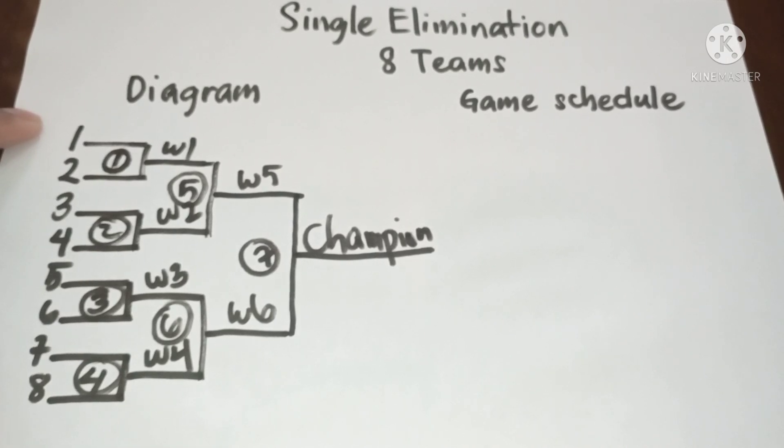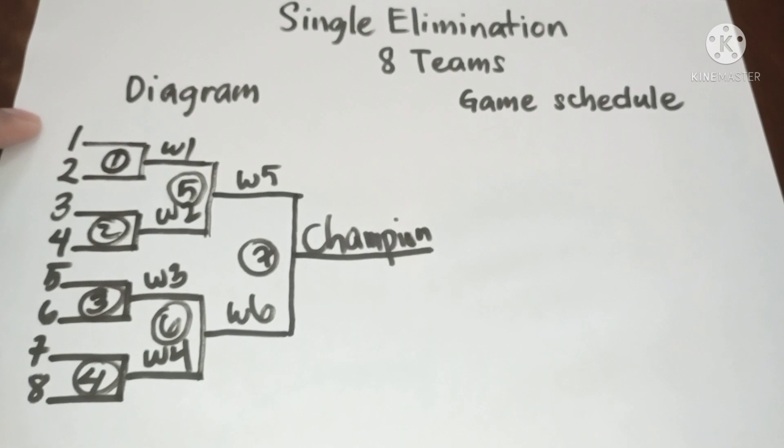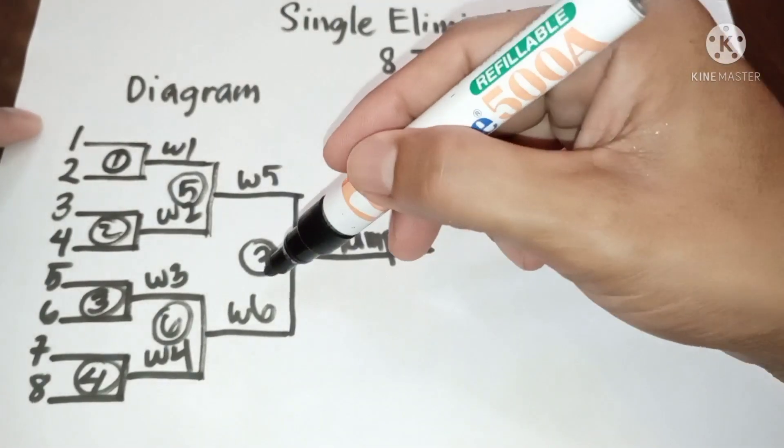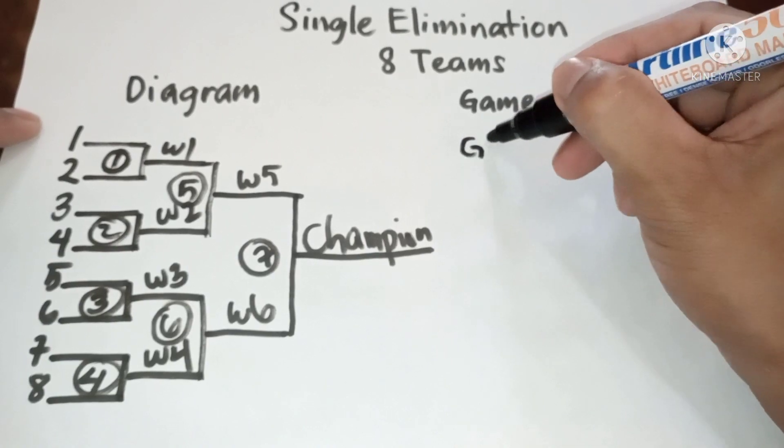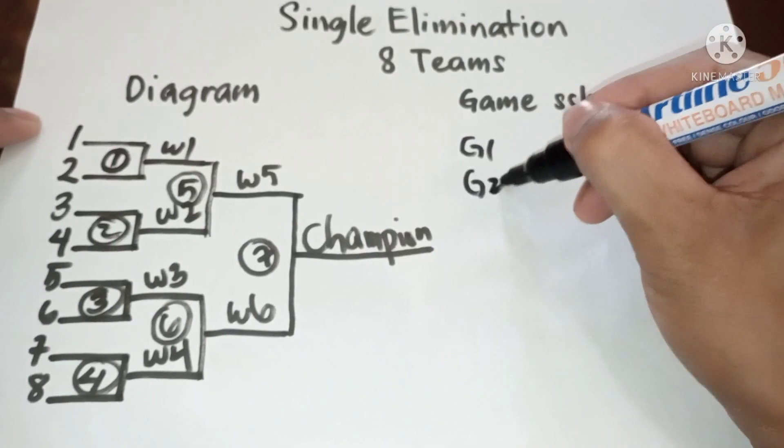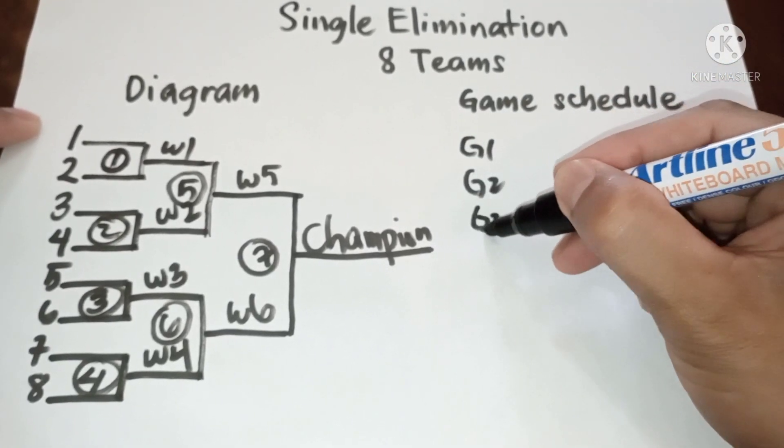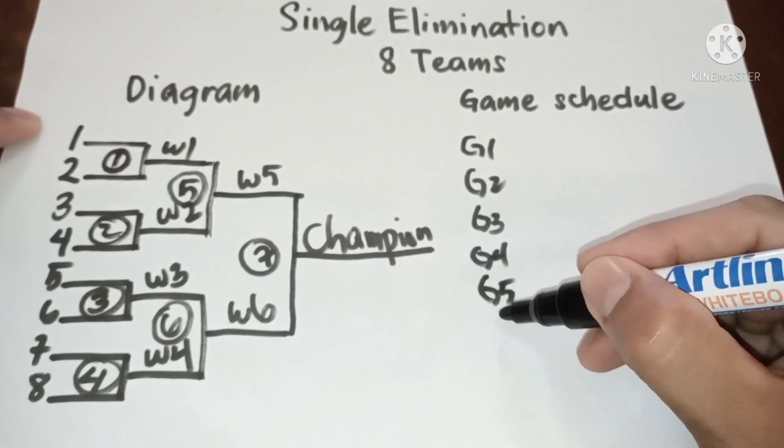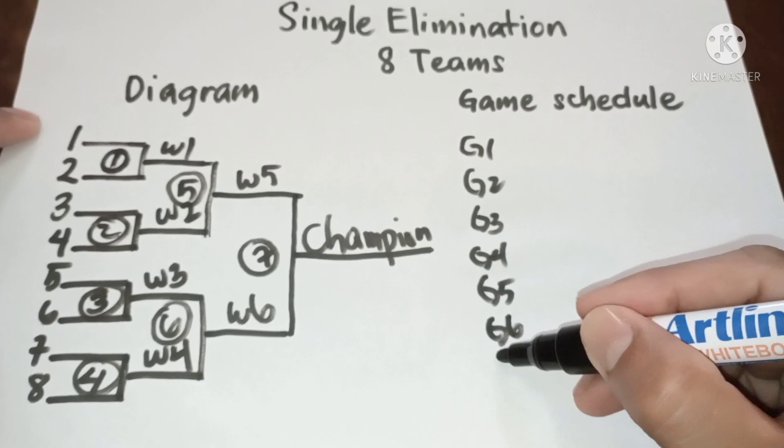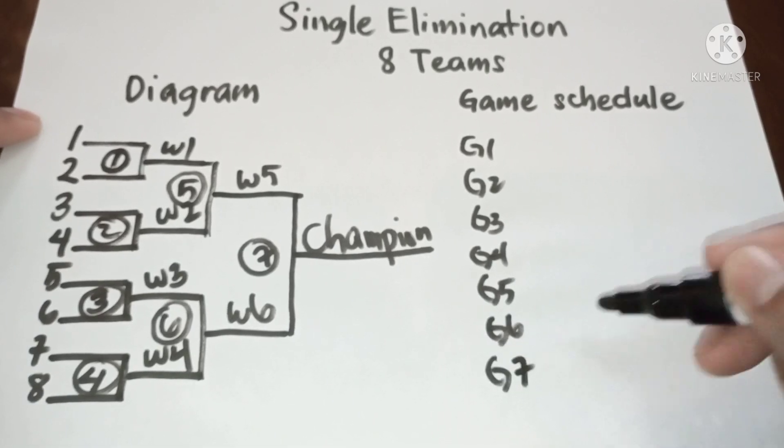Now let's proceed to game schedule. So since we have seven games: game one, game two, game three, game four, game five, game six, then game seven.